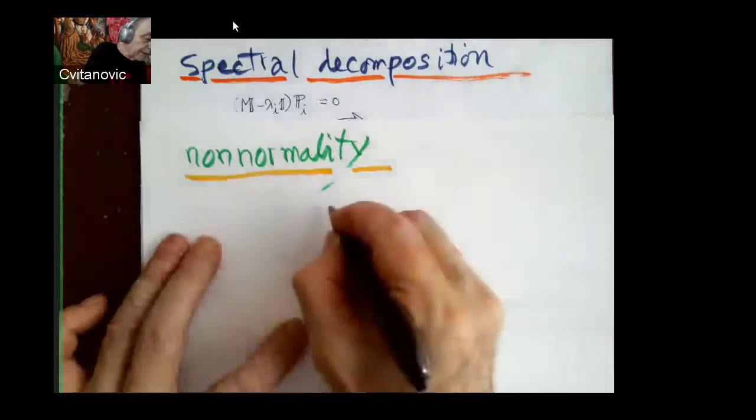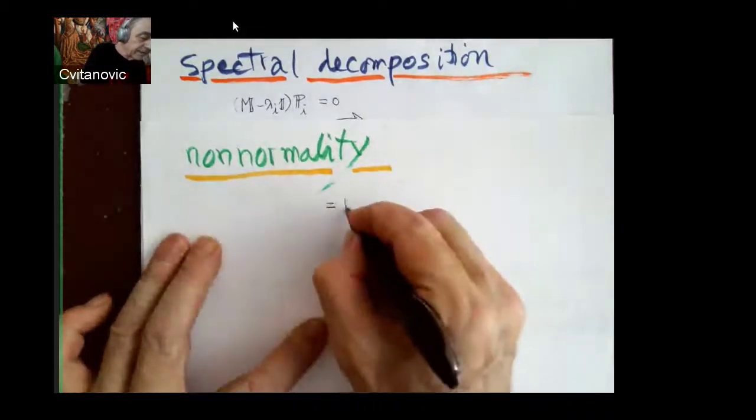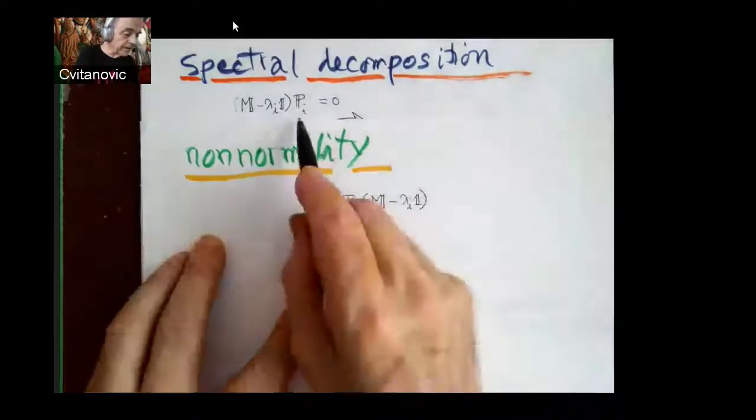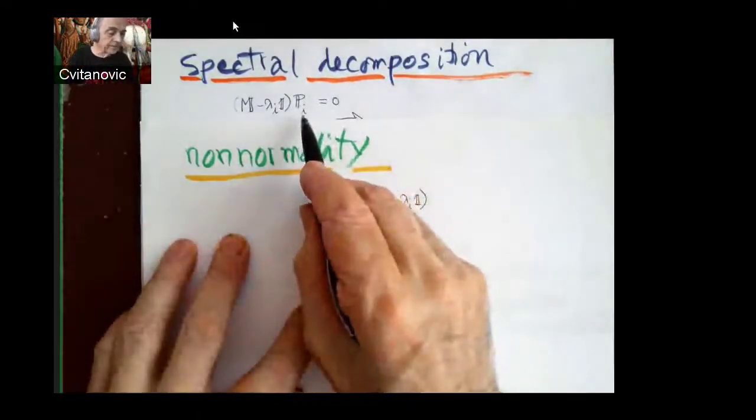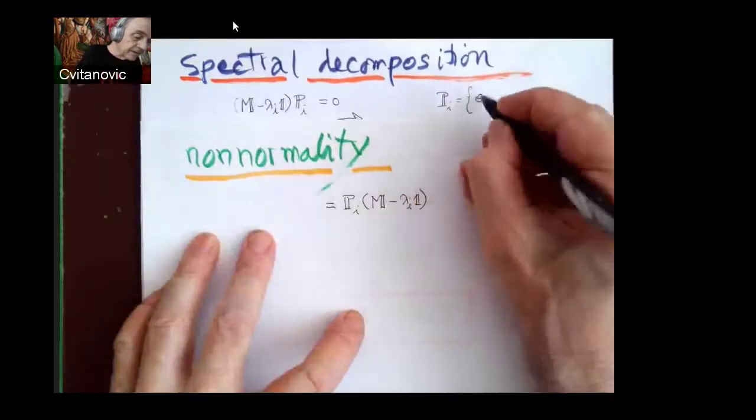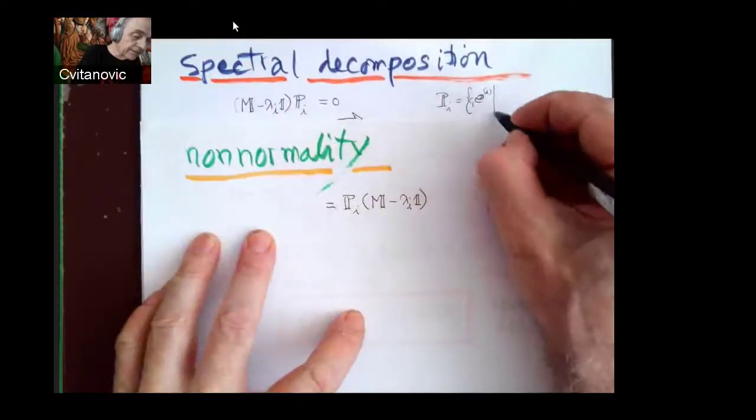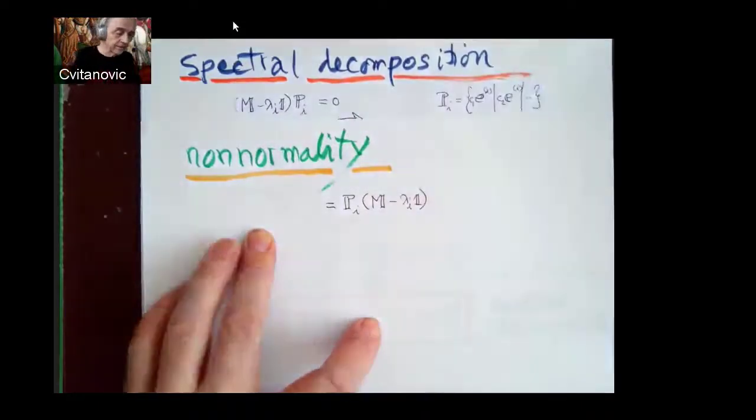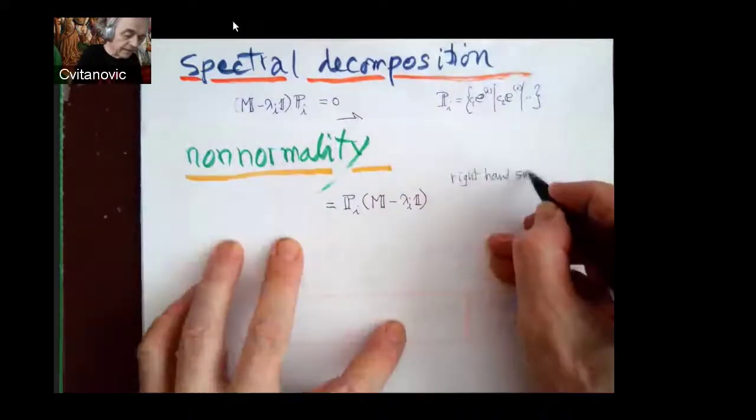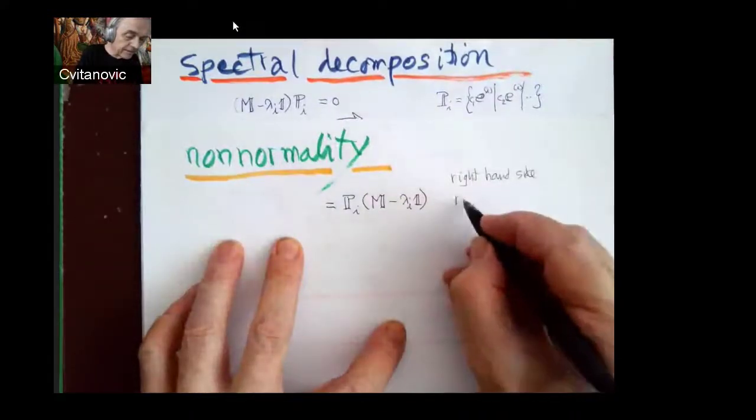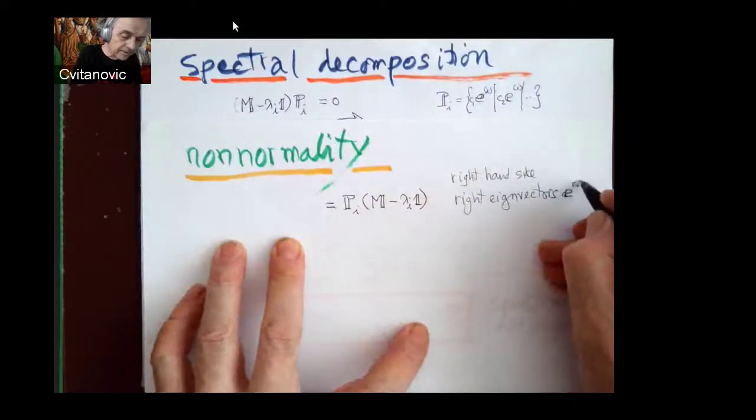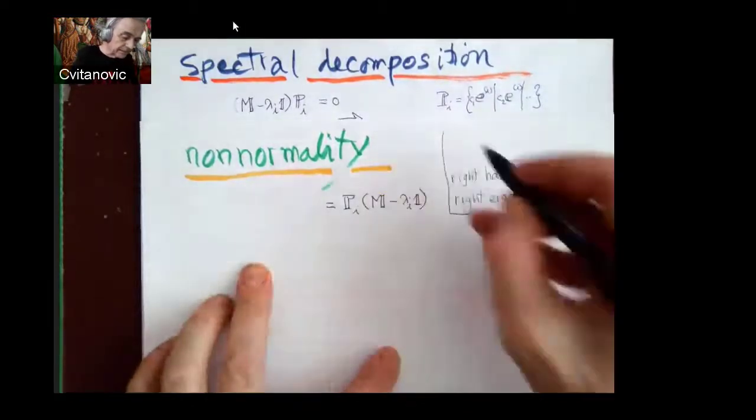So we can write this also as Pi on the left-hand side. If we write it on the right-hand side, then Pi is the eigenvector in every column just multiplied by some constant. So on the right-hand side, we have right eigenvectors, which I will denote as a d-dimensional vector with an upward label i.